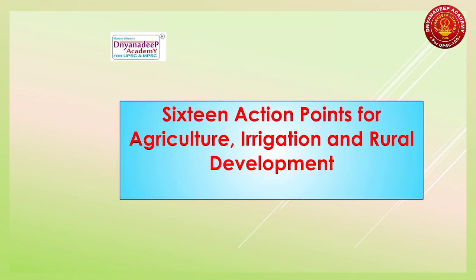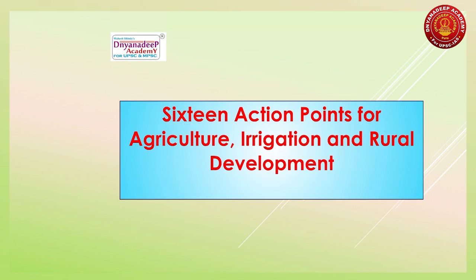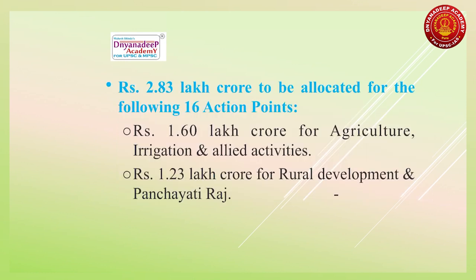Agriculture, irrigation and rural development will focus on a 16 action point agenda. You are not expected to remember exact amounts allocated — instead, remember which section got more funds. Agriculture, irrigation and allied activities got more funds compared to rural development and panchayats, which got less funds. UPSC could ask about the weightage given to these various activities.